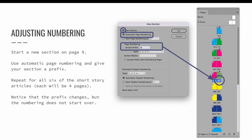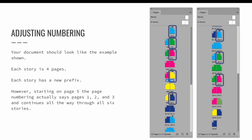If we check the pages panel, you can see where the page numbering started. It now says SB, and instead of starting with number one again, it continues the page numbering from the previous section — so it's SB5, SB6, SB7, and SB8. I went ahead and created sections SC, SD, SE, and SF, so that I have a new section for each of my six short stories.